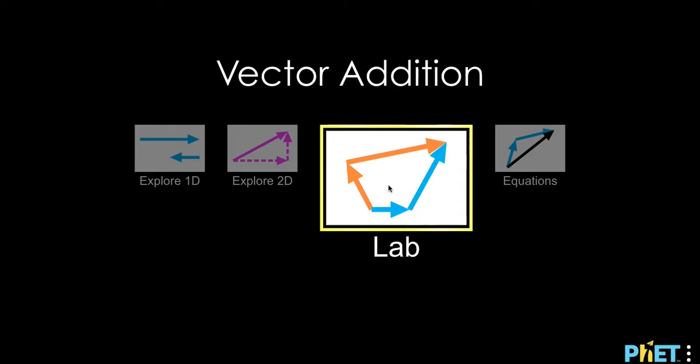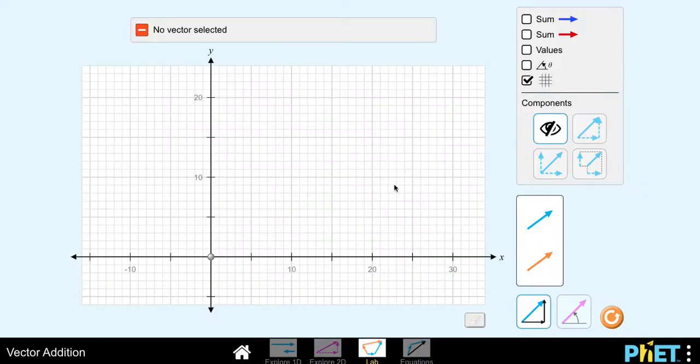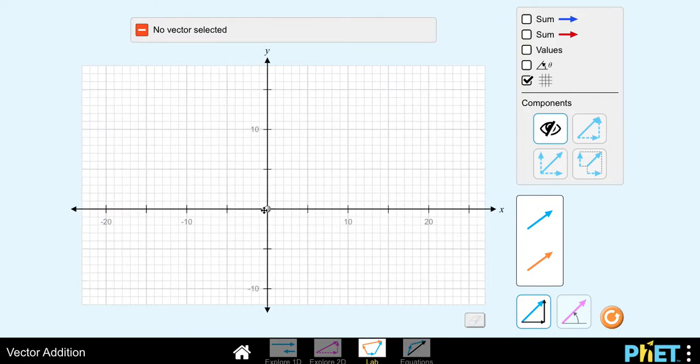So from the list of choices, choose lab. And my first step is going to be to reorient the axis so that the coordinate plane is a little bit more in the center. It's going to make it a little bit easier to work with.